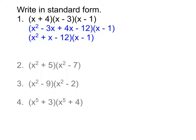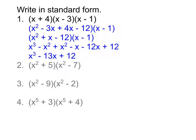For this problem, the first thing we do is multiply the first two sets of parentheses together — we multiply x plus 4 times x minus 3, simplify that, and then multiply that trinomial by the remaining binomial, just like we were doing last week. When all is said and done, after multiplying out and combining like terms, you get x cubed minus 13x plus 12. Notice there's no x squared term because it happened to cancel out.